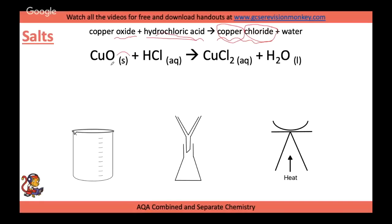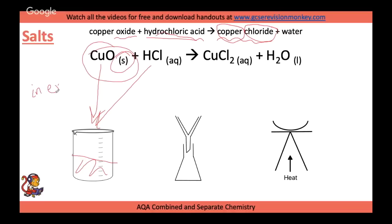In this case, we've got a solid — this state symbol means solid — mixing and reacting with our acid. We'd add the solid and our acid into a beaker. It's important to add the solid in excess — keep adding until no more will react. Because you've got excess in there, you'll then need to filter it using a conical flask, a funnel, and don't forget the filter paper. That will collect any excess solid. In the filtrate, you should have your copper chloride solution — copper chloride dissolved in water.